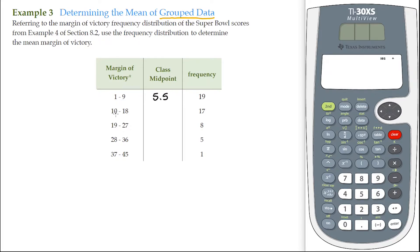And we do that for each one. The lower class limit of 10, a lower class limit of 19. 10 plus 19, divide that by 2, that gives us a class midpoint of 14 and a half. We take the lower class limit of 19, add that to the lower class limit of 28. 19 plus 28, divide it by 2, that's 23 and a half.